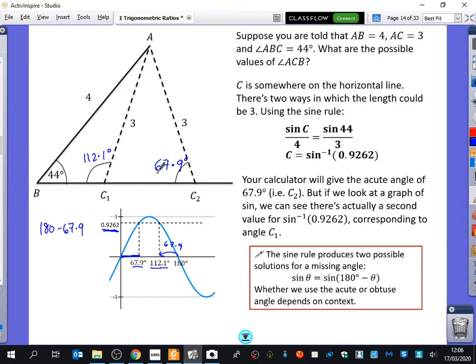So the sine rule produces two possible solutions for a missing angle. One of them is sine theta. And the other one is the sine of 180 minus theta. Whether we use the acute or obtuse angle depends on the context of the question. So once you get your answer for theta, that will be acute. If you want the obtuse one, you do 180 minus theta. And that one gives you the obtuse.